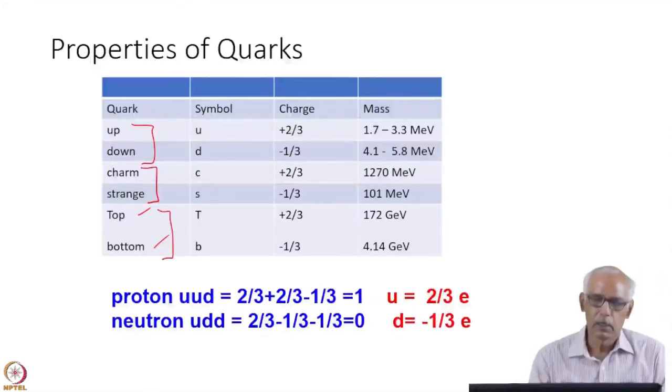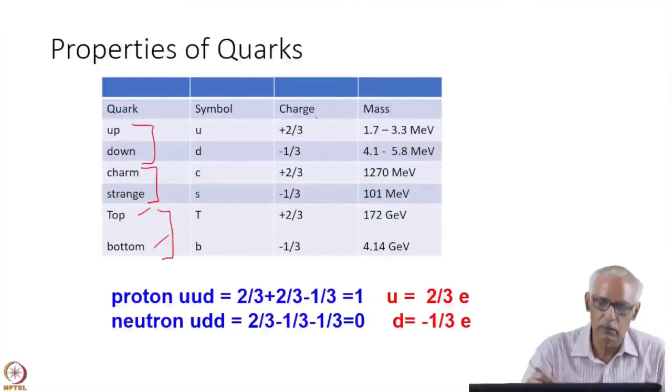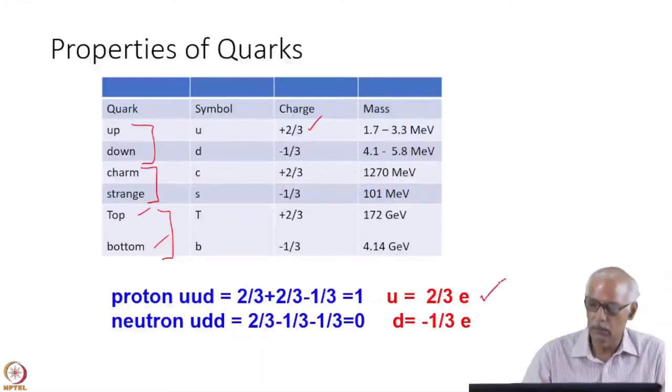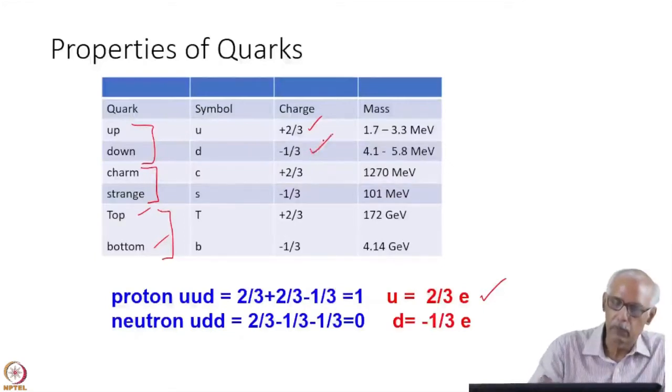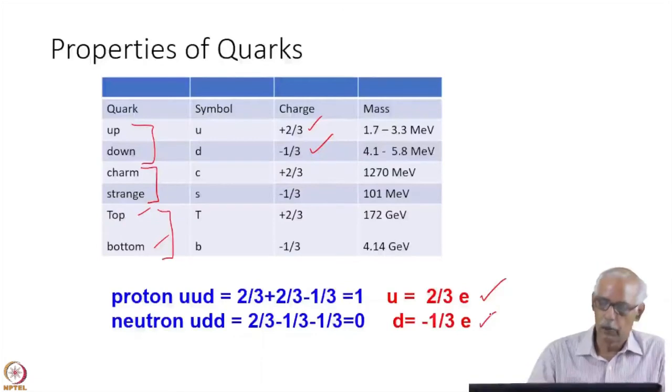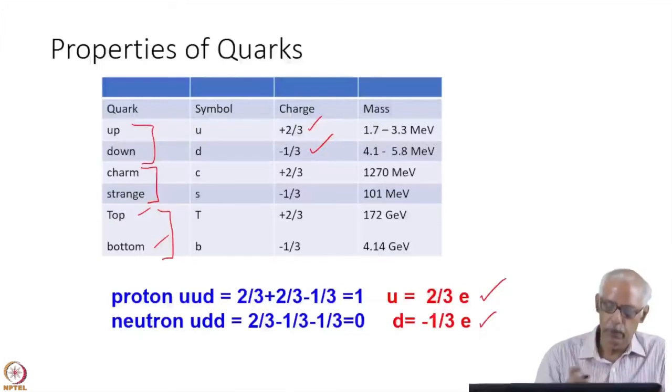Now, these are some of the parameters. You see here, this is very interesting, that up quark is 2 by 3 plus of electron. Here you can see that they are fractional charges. And down is minus 1 by 3. If you put these things, then proton consists of UUD, because proton has charge 1, unit 1. And therefore, UUD, you can have 2 by 3 plus 2 by 3 minus 1 by 3. And that is why you get 1.